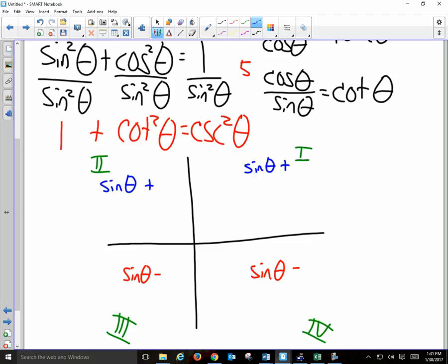Where is cosine positive? Cosine is which value? X. Where is X positive? Cosine of theta is positive. If cosine is the X value, where would it be negative?